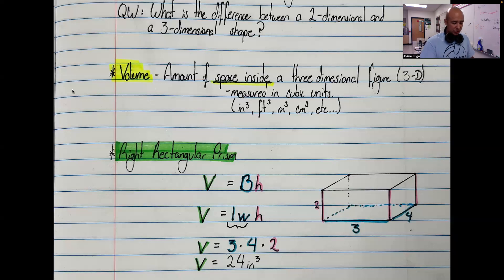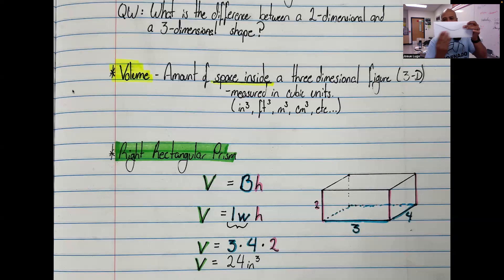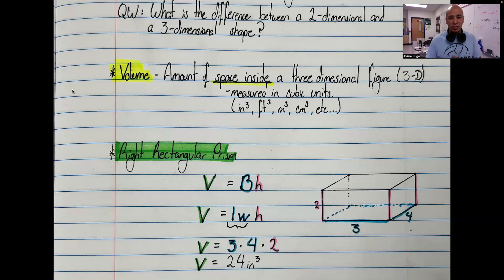Even something like a circle has a horizontal component and a vertical component depending on where you are measuring it. Same thing with a rectangle — we have a horizontal and a vertical component. So rectangles, triangles, squares, any kind of parallelogram, trapezoid, etc. — those shapes all have only two dimensions. But consider a three-dimensional shape.